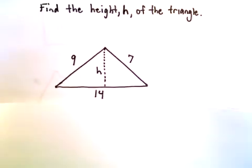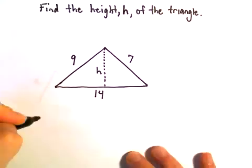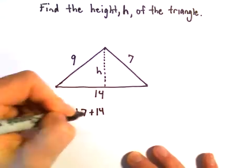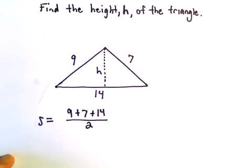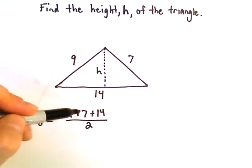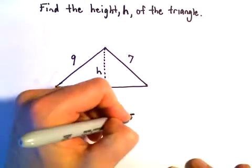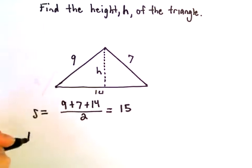Okay, so let's use Heron's formula. It says first we've got to figure out the semi-perimeter. So we add all the lengths up and divide by 2. So 9 plus 7, that's 16, plus 14, that's 30, over 2, or 15.